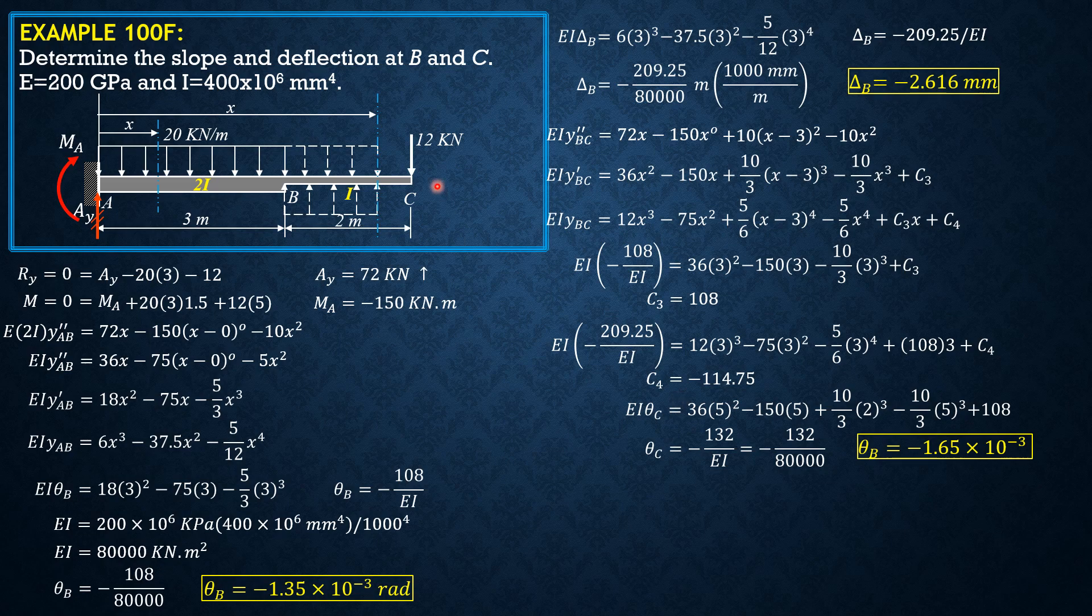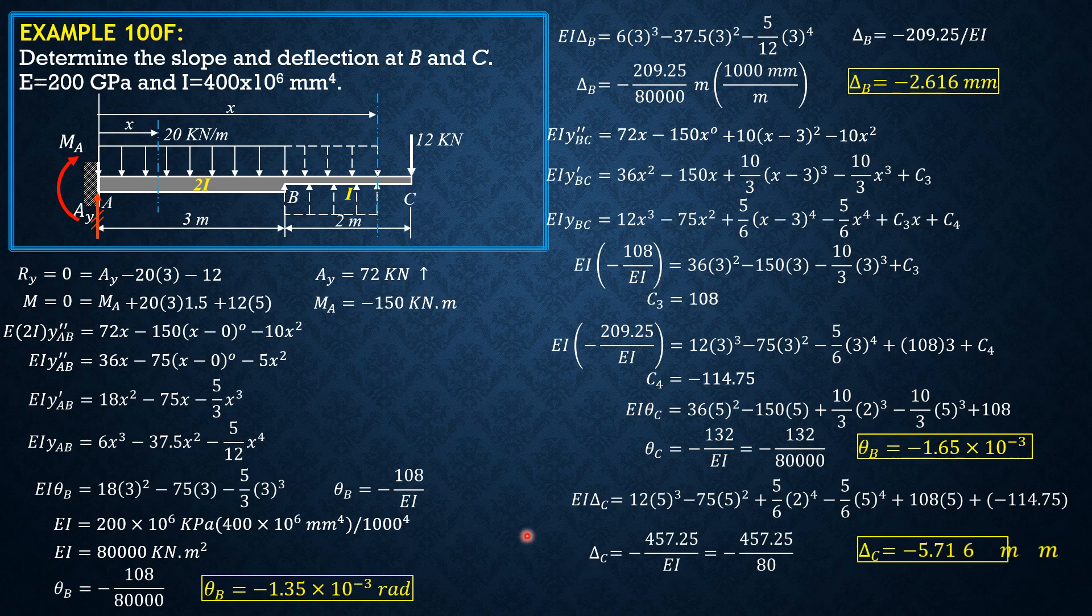Then finally for delta C into this equation, X is 5 and we already found C sub 3 and C sub 4. So EI delta C equals 12 times 5 cubed minus 75 times 5 squared plus 5 over 6 times 2 to the 4th minus 5 over 6 times 5 to the 4th plus 108 times 5 plus negative 114.75. So delta C is equal to negative 457.25 over EI. So the shortcut, you just use 80, divide by 80. Automatic delta C is in mm. So delta C or deflection at C is negative 5.716 mm.